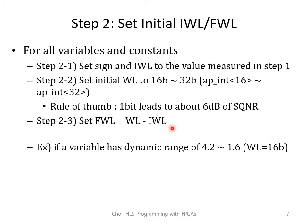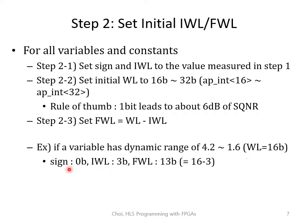Let's see some examples. Suppose a variable has a dynamic range from 1.6 to 4.2, and you have decided to set the word length to 16 bits. This variable always stays positive, so you don't need a sign bit. The variable has a maximum value of 4.2, so you need 3 bits of IWL — with 1 bit you can express up to 1, 2 bits up to 3, and 3 bits up to 7. Finally, since we have set the word length to 16, the fractional length is going to be 16 minus 3, so 13 bits.